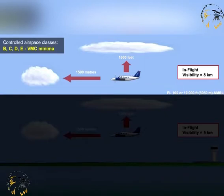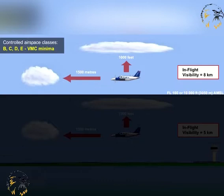Above 10,000 feet, or above flight level 100 if the transition altitude is below 10,000 feet, VMC minima in controlled airspace require the pilot to have an in-flight visibility of at least 8 km, and to be able to maintain vertical separation from cloud of at least 1,000 feet, and horizontal separation from cloud of at least 1,500 meters.